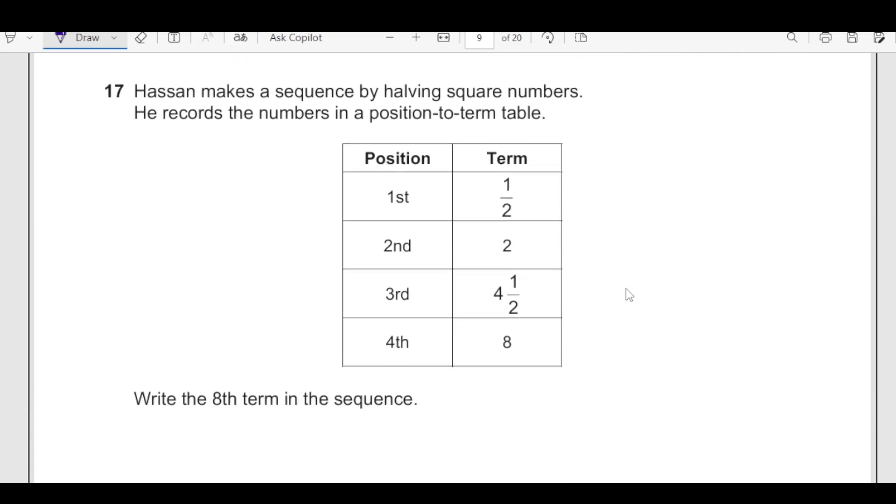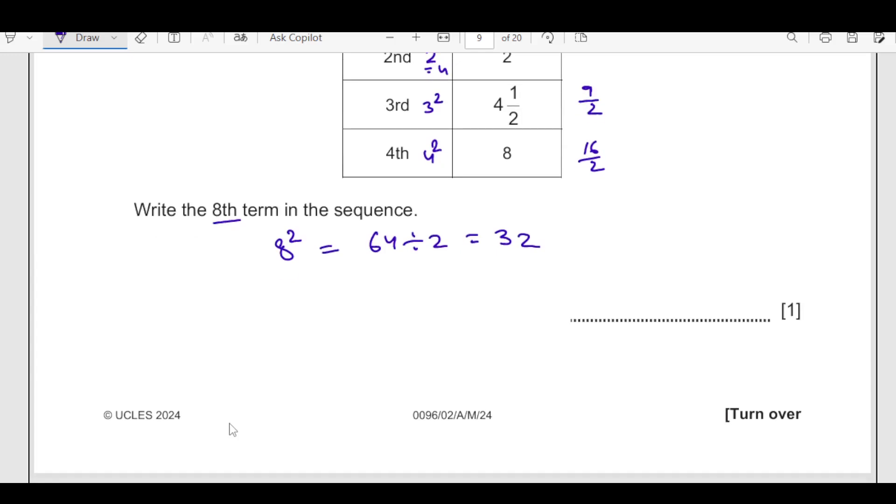Number 17, Hassan makes a sequence by halving square numbers. He records the number in a position to term table. Write down the 8th term. If you see here, the rule is given by halving the square, half of the square. First term the square is 1 square, half of it, that is 1 over 2. Second term is 2 square. 2 square is 4, 4 divided by 2 is 2. Then 3 square is 9, 9 divided by 2 is 4 and a half. 4 square is 16, 16 divided by 2 is 8. We are talking about 8th term. Square is 8 times 8 is 64, then divided by 2, half of that is 32. The answer is going to be 32 for this question.